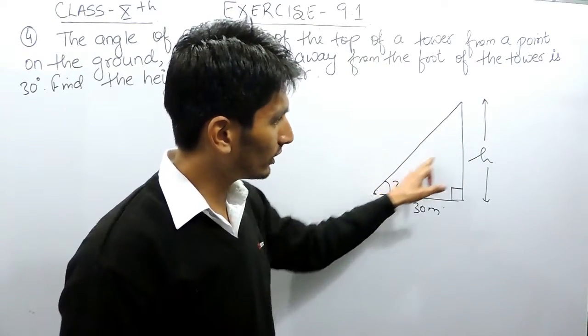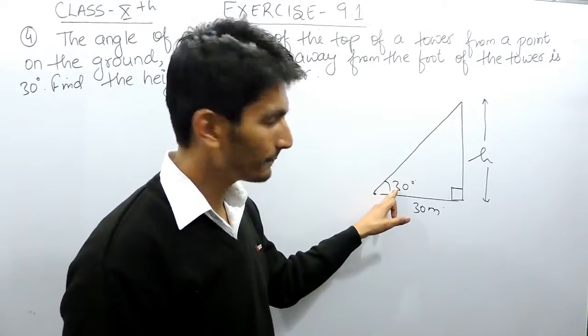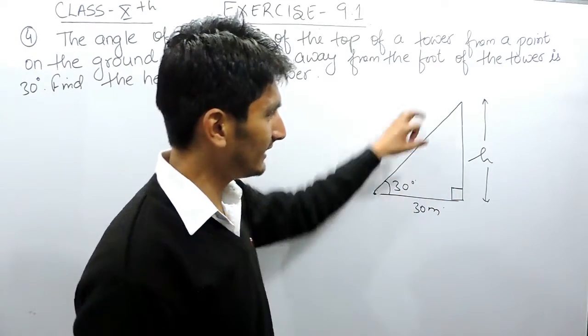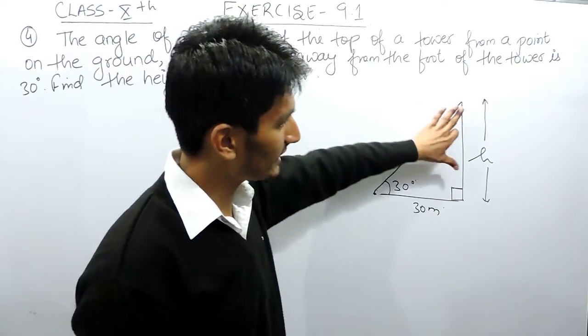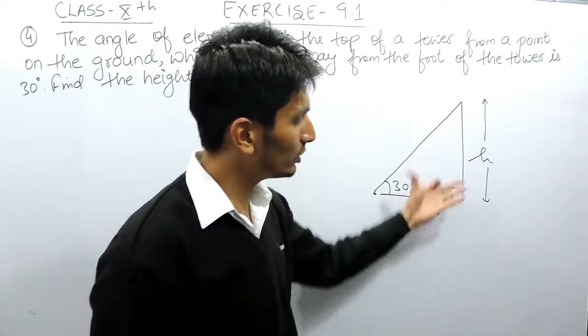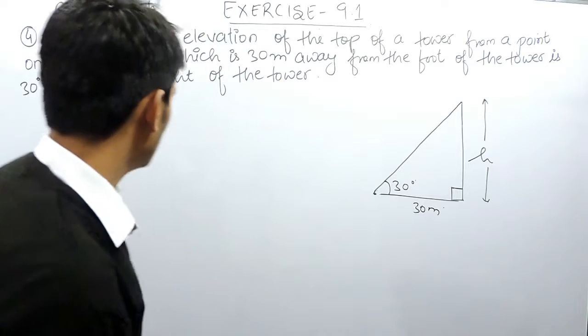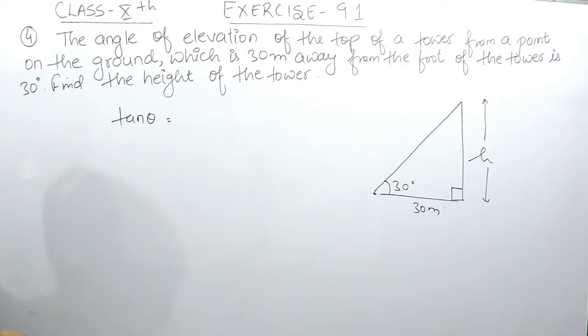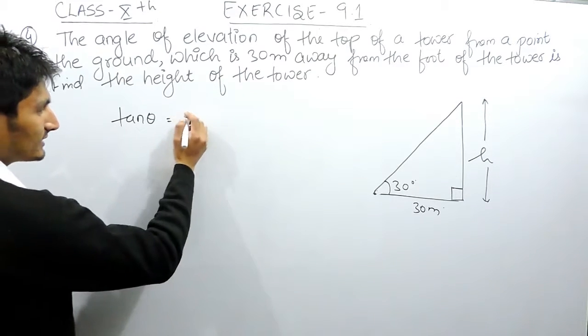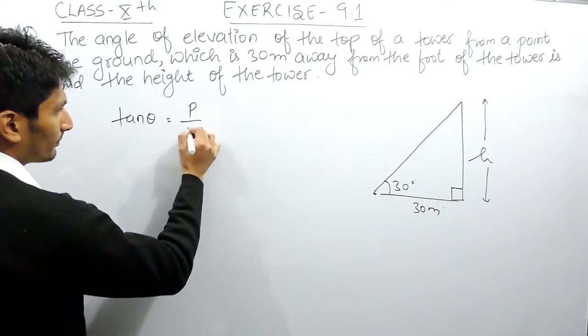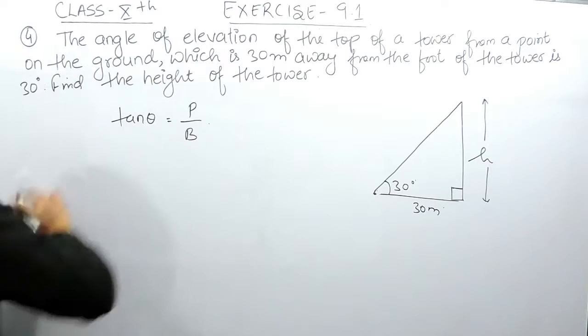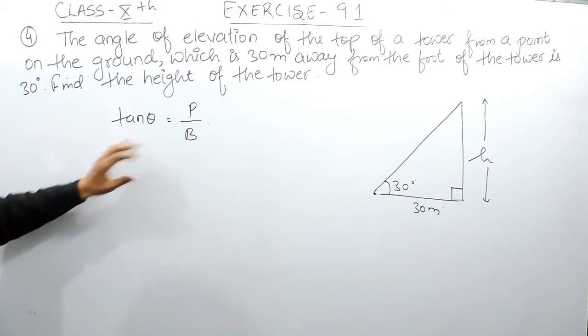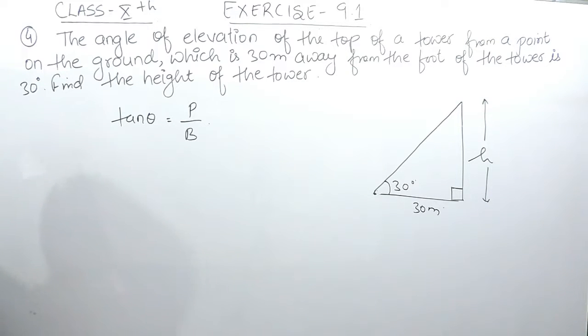We know this side, we know the angle, and you have to find this side. This is the perpendicular opposite to this theta, this is the base, and the side opposite to 90 degrees is the hypotenuse. In this case, you have to find the ratio between perpendicular and base, and we know for that we use tan theta. The ratio for tan theta is perpendicular upon base, as we discussed in the previous video.